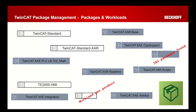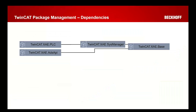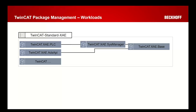Overall, as an idea, we have one workload per product. We have dependencies between these products — the PLC might require a system manager on the engineering side, and the system manager might depend on something called XAE base, which provides foundational components. So we have dependencies between them. They are directly defined within the packages, so you don't have to deal with it yourself, but you could easily look it up.